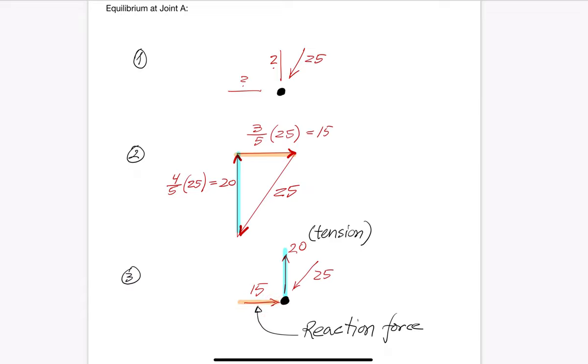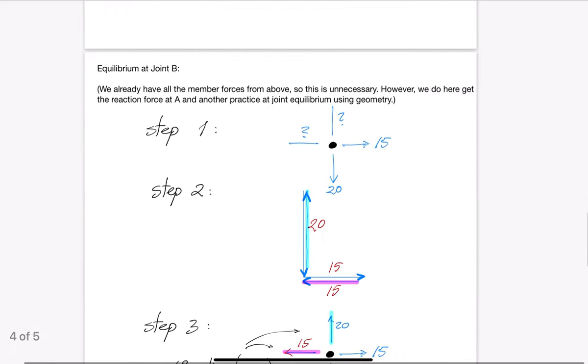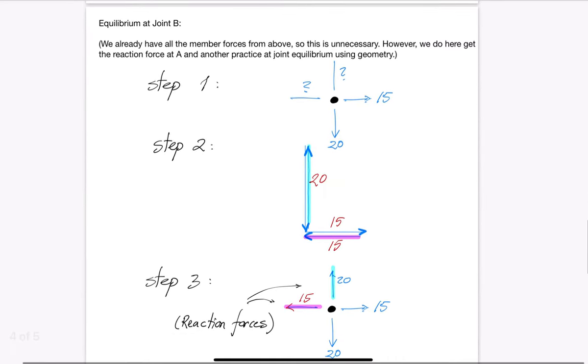When we move to joint B, which is the top left joint, we recognize that only the support reactions at B are still unknown. We already know all the member forces. Following the same procedure as earlier, we find that the force polygon is here simpler than usual. The horizontal member force is directly matched by the horizontal reaction force. The vertical member force is directly matched by the vertical reaction force.